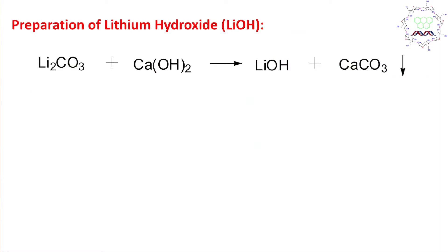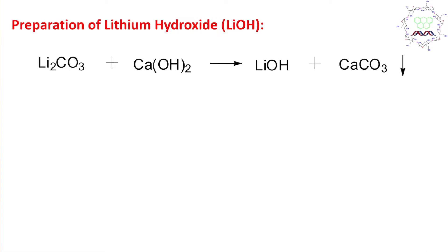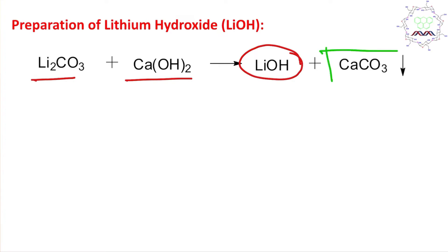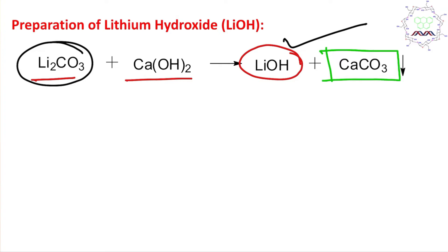Another important lithium chemical is lithium hydroxide. It is prepared by the reaction of lithium carbonate with calcium hydroxide, which produces lithium hydroxide; in this case, the calcium carbonate produced is insoluble and precipitates out from the reaction medium. Since the lithium carbonate used is pure, the resulting lithium hydroxide is also pure.